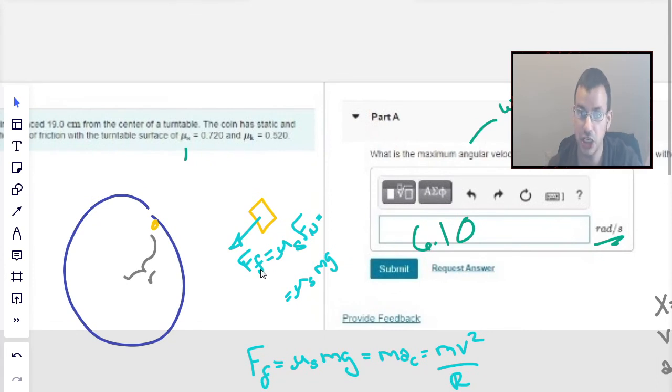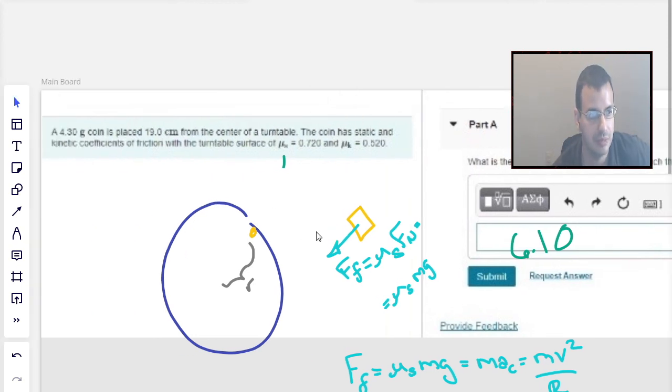You basically balance. It's the force of friction which is causing the acceleration to allow the coin to move in circular motion. You use static coefficient because the coin is not moving relative to the turntable. And the coefficient of friction, the kinetic coefficient of friction and the mass of the coin, irrelevant, doesn't matter. Hope that helped. See you next time.